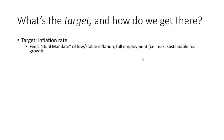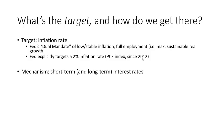The Fed aims to maximize the sustainable real growth of the economy, which would presumably bring about full employment. In order to do this, the Fed focuses on the inflation rate. Since 2012, the Fed has explicitly targeted a 2% inflation rate in the personal consumption expenditures price index. The way the Fed achieves its inflation rate target is through targeting interest rates, primarily short-term, but when times require, also long-term interest rates.